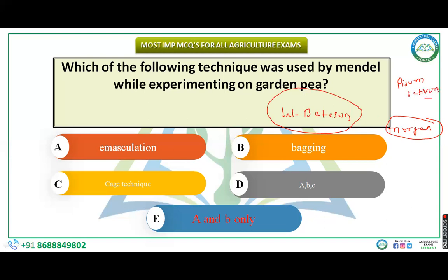While Mendel was experimenting on garden pea, he used various techniques. The question is: which of the following techniques was used by Mendel while experimenting on garden pea? The options are: (A) emasculation, (B) bagging, (C) case technique, (D) A, B and C all, and (E) A and B only.